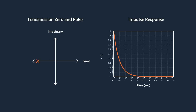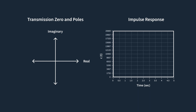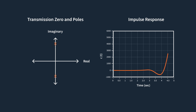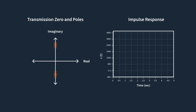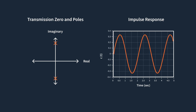If all the poles lie in the left half of the s-plane, then the system is stable. If any pole lies in the right half of the s-plane, then the system is unstable. If the system has two or more poles in the same location on the imaginary axis, then the system is unstable. And finally, if the system has one or more non-repeated poles on the imaginary axis, then the system is marginally stable.